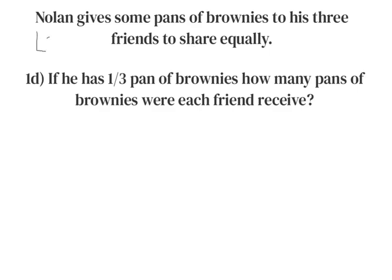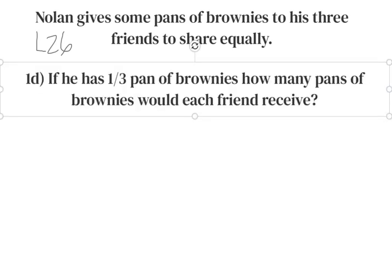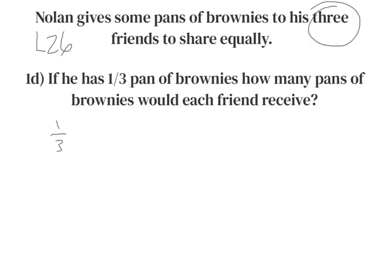This is still lesson 26, practice problem 1d. Now if he has one third pan of brownies, how many pans of brownies would each friend receive? Think about what we've done in the previous problems. He starts with one third pan of brownies and he has to divide it by three people to share equally.